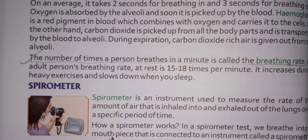An adult person's breathing rate at rest is 15 to 18 times per minute. It increases during heavy exercise and slows down when you sleep.